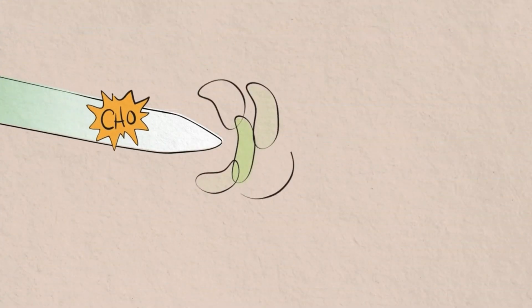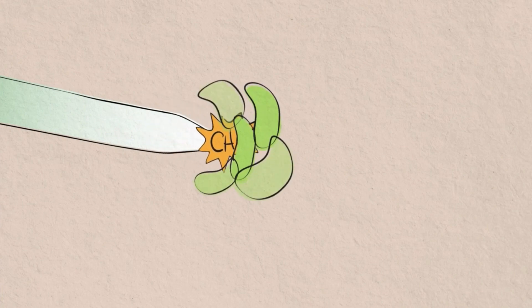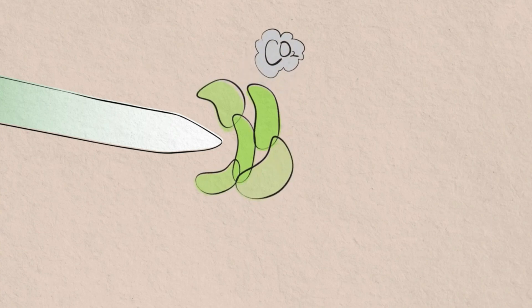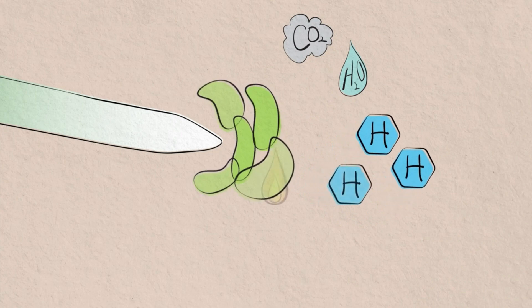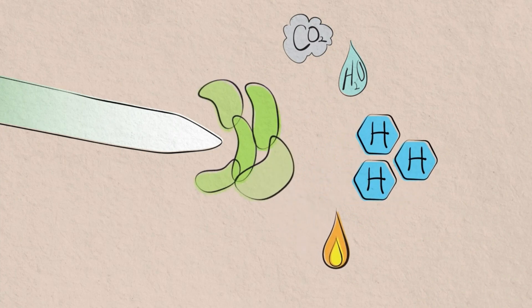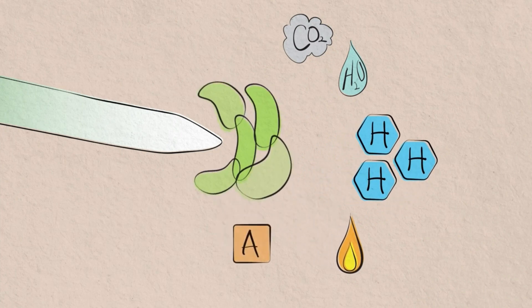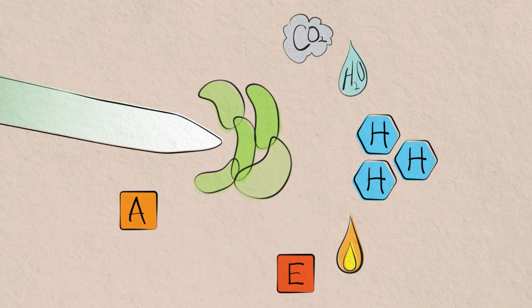Once at the roots, this carbon energy is consumed by bacteria that live in the soil. The bacteria break the carbon molecule down into carbon dioxide, water, and hydrogen ions.